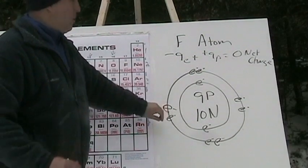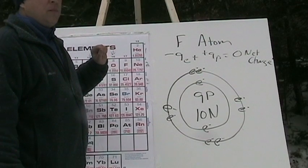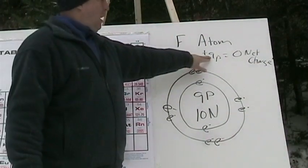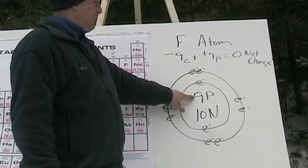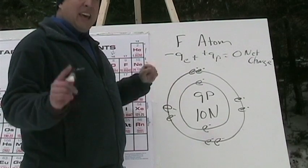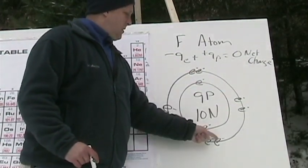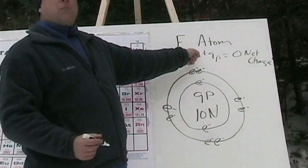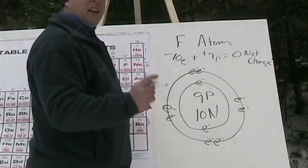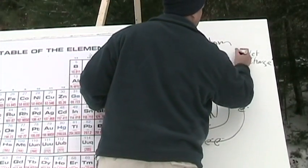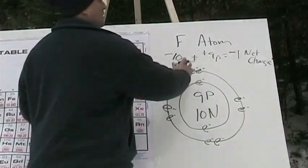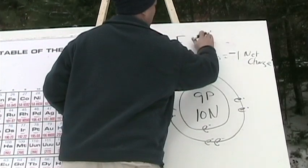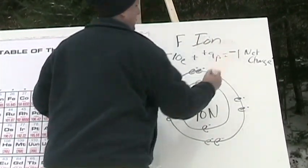That's of course except if you just have one energy shell — then it's full with two. All other outer shells are full with eight. Our protons have not changed; we still have nine protons. Now we have ten electrons total. Negative ten plus positive nine equals a negative one net charge. This is no longer an atom — you have to change this to an ion.